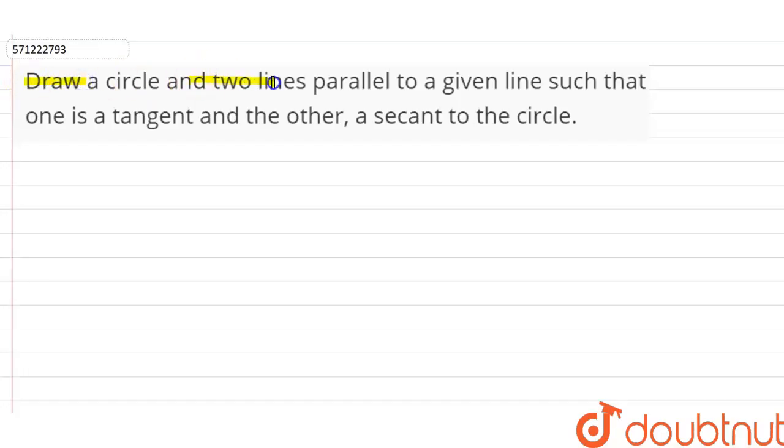Draw a circle and two lines parallel to a given line such that one is a tangent and the other is a secant to the circle.